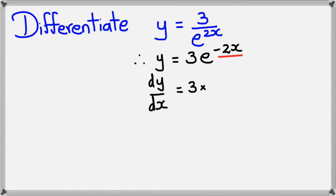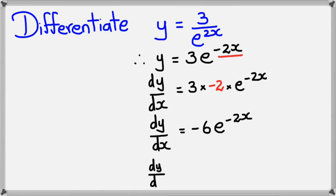So dy/dx would equal 3 multiplied by... Now I've got to look at the power and differentiate it. So I've got -2x here. If I differentiate that, I get -2. And now that's multiplied by e^(-2x). So this would be -6e^(-2x). And finally simplifying it, I would get -6/e^(2x).